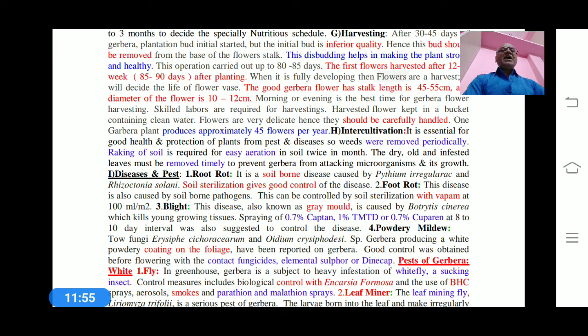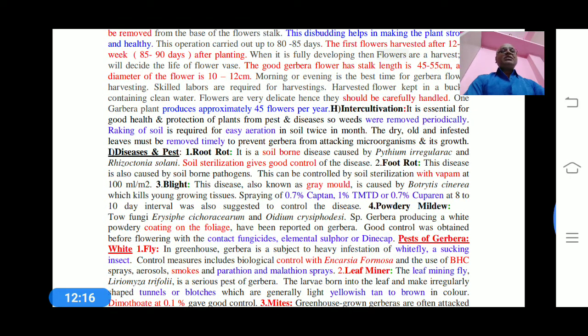Cutting should be done early in the morning or evening, which is the best time for gerbera cutting. Cutting plants should be stored in clean water containers. Flowers are very delicate and should be carefully handled. Gerbera plants once planted produce approximately 45 flowers per year. Inter-cultivation practice is also essential.